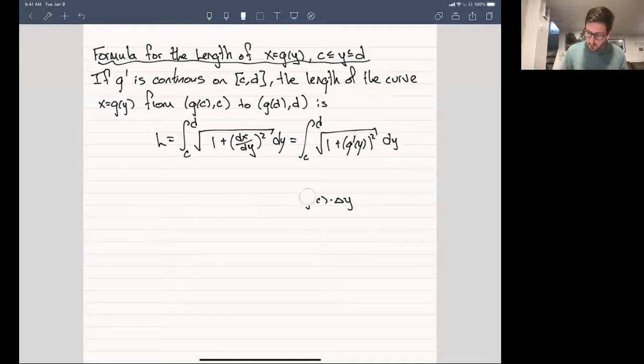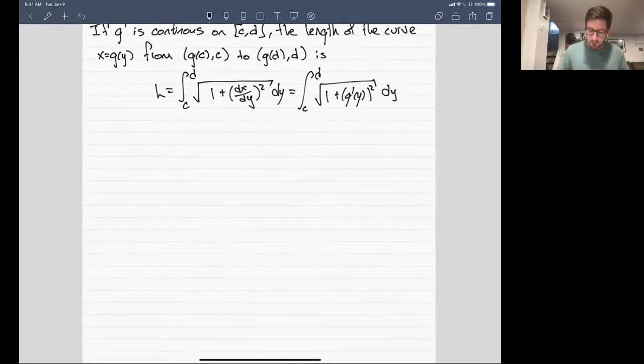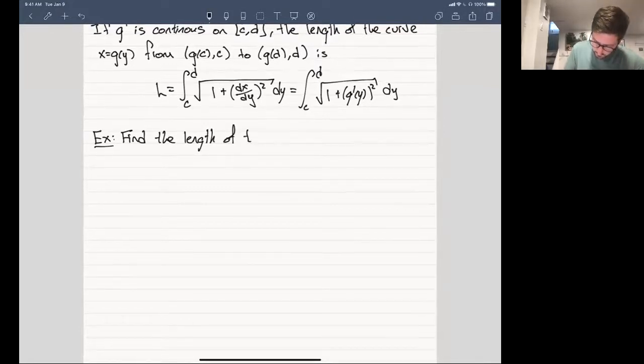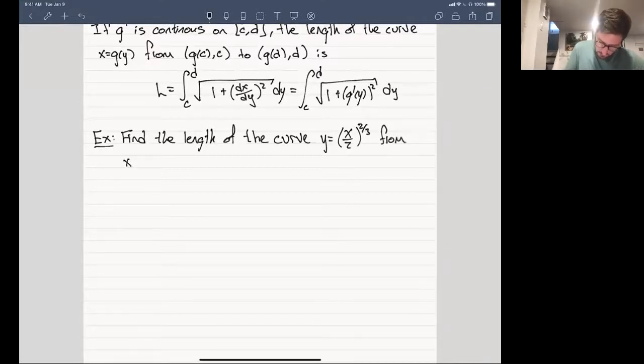Okay, so the question is, how does this actually help us? Let me give you a specific example to show you where this subtlety creeps in. So suppose I say find the length of the curve, which will be given by y equals (x/2)^(2/3) from x equal to zero to x equal to two.